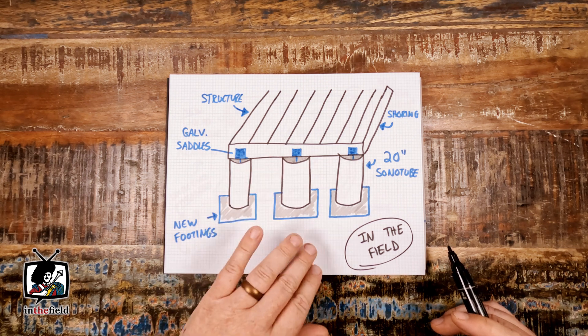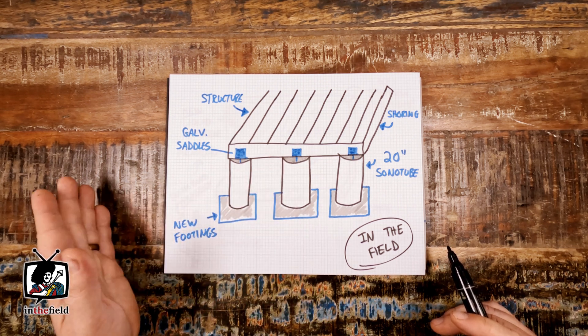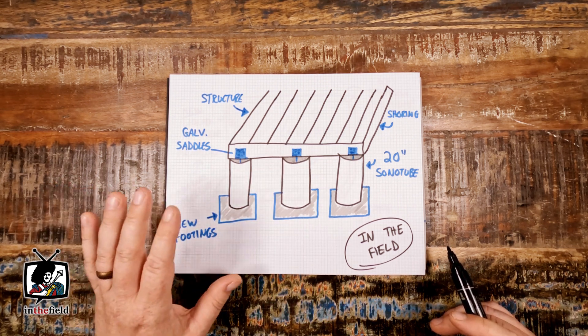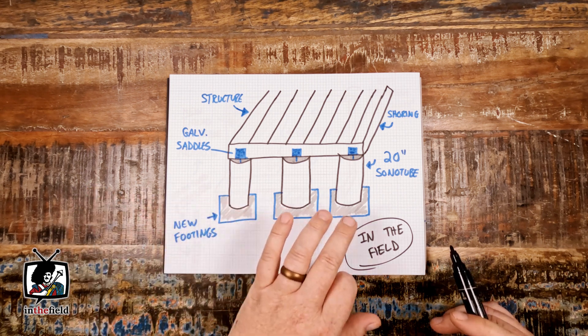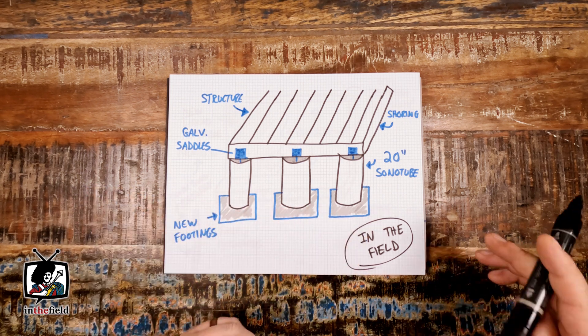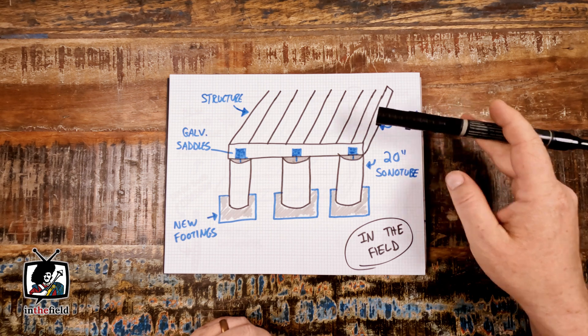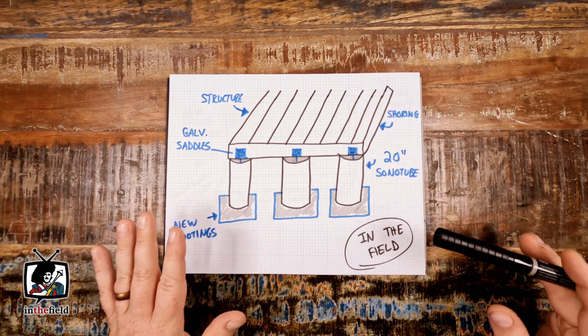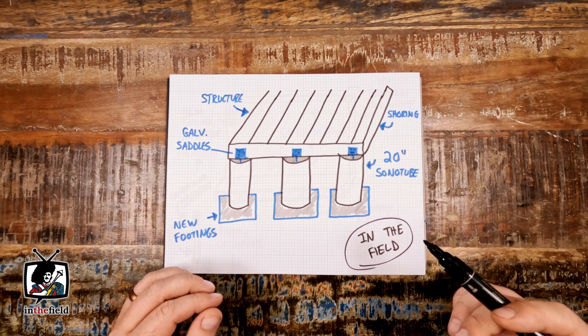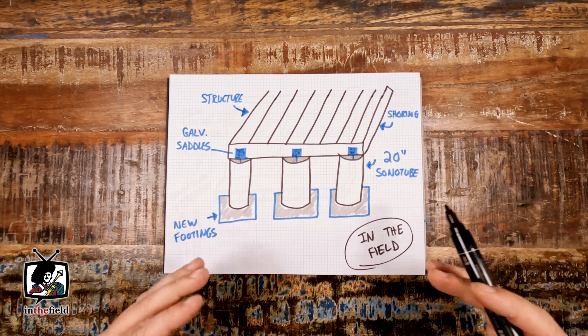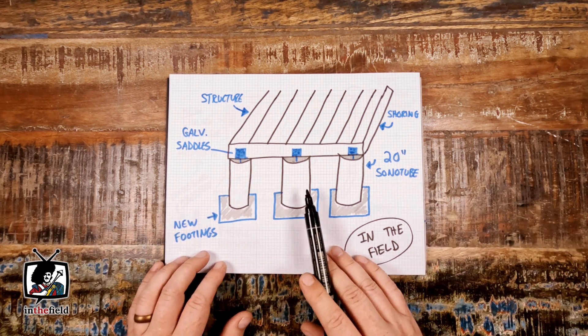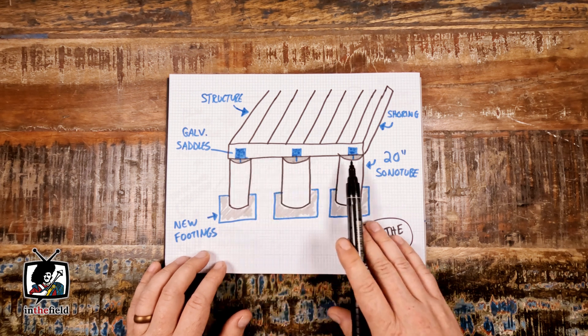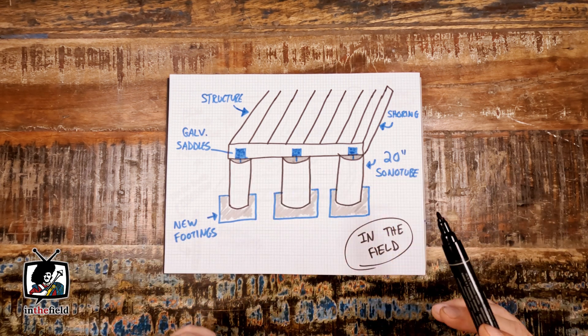So this project was a unique one. A client reached out to us and wanted to replace some existing sonotubes that were holding up a one-story structure and the city required that these sonotubes be removed because they were undersized and wanted them replaced with larger diameter sonotubes with new joist reinforcements as well.